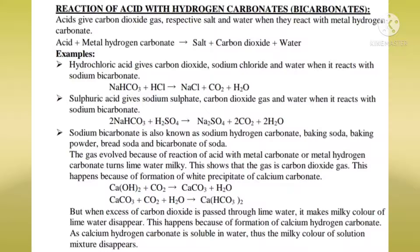The reaction of acid with hydrogen carbonate or bicarbonate also produces salt, carbon dioxide, and water. The general equation: acid plus metal hydrogen carbonate gives salt, carbon dioxide, and water. For example: sodium hydrogen carbonate plus hydrochloric acid gives sodium chloride (NaCl), CO₂, and water. Sodium hydrogen carbonate plus sulfuric acid gives sodium sulfate, CO₂, and water.